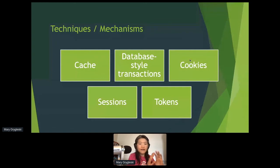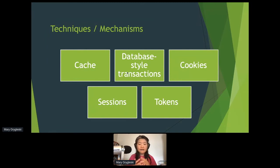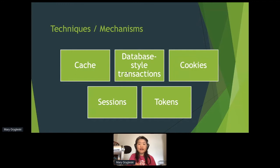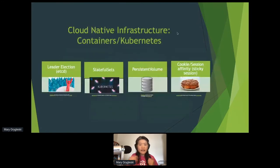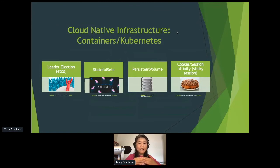Techniques and mechanisms for state management in cloud-native systems that are still used today include caching — for example, the JCache specification in Java with providers like Hazelcast. There are also database-style transactions, cookies, HTTP sessions to carry state, and tokens like JWT. These are the techniques and mechanisms at the application level.